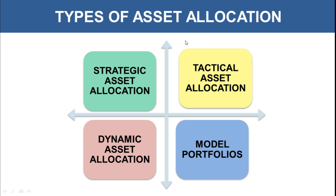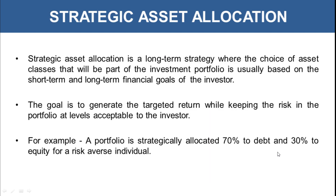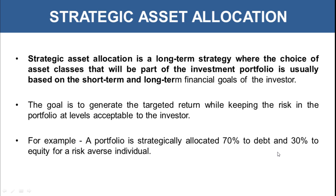Now coming to types of asset allocation — there are majorly four types: strategic asset allocation, tactical asset allocation, dynamic asset allocation, and model portfolios. Strategic asset allocation is a long-term strategy where the choice of asset classes in an investment portfolio is usually based on the short-term and long-term financial goals of the investor. You are building up your investment portfolio to achieve a particular financial goal, making a strategy to generate the corpus required for that financial goal.